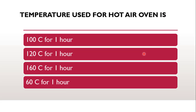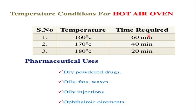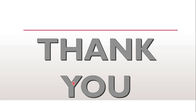The next question says: the temperature used for hot air oven sterilization is — 100°C for 1 hour, 120°C for 1 hour, 160°C for 1 hour, or 60°C for 1 hour? The correct answer is 160°C for 1 hour. As the temperature increases, the time duration decreases: 160°C for 60 minutes, 170°C for 40 minutes, and 180°C for 20 minutes. The hot air oven is applicable for sterilization of dry drugs, powder drugs, oils, fats, waxes, oily injections, and ophthalmic ointments. With this, we finish a few MCQs from sterilization. Thank you and stay tuned for upcoming parts from different topics in microbiology.